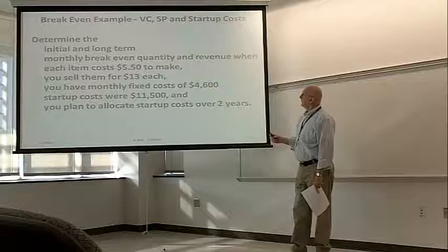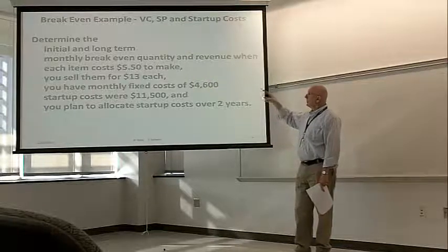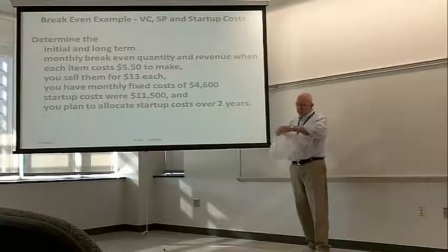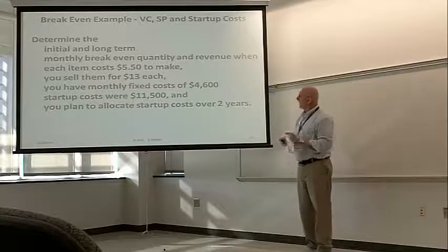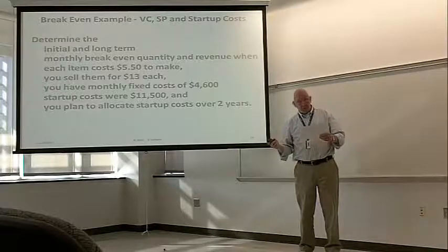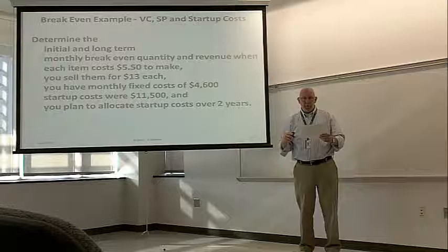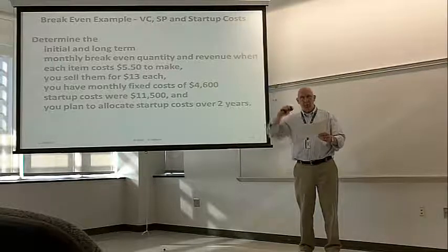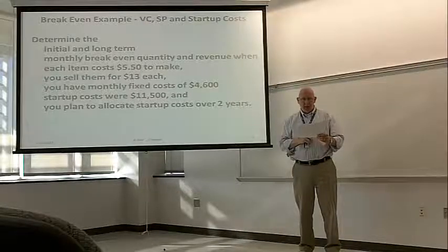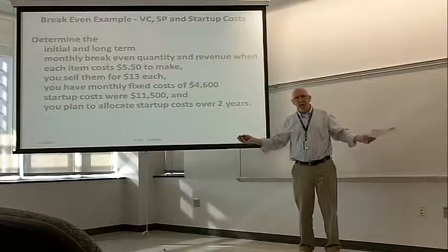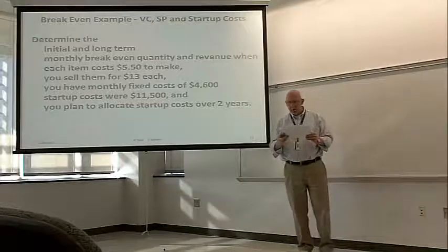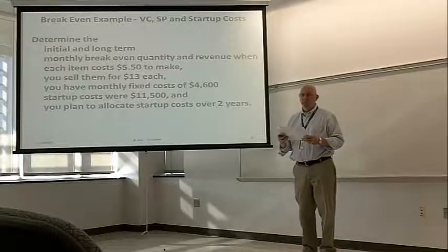Here is an example. Determine initial and long term monthly breakeven quantity and revenue. Each item costs $5.50 to make. You sell them for $13. You have monthly fixed costs of $4,600. Forever. Start-up costs were $11,500. And, for no apparent reason, or perhaps a good reason, you plan to allocate those start-up costs for a period of two years, or 24 months.